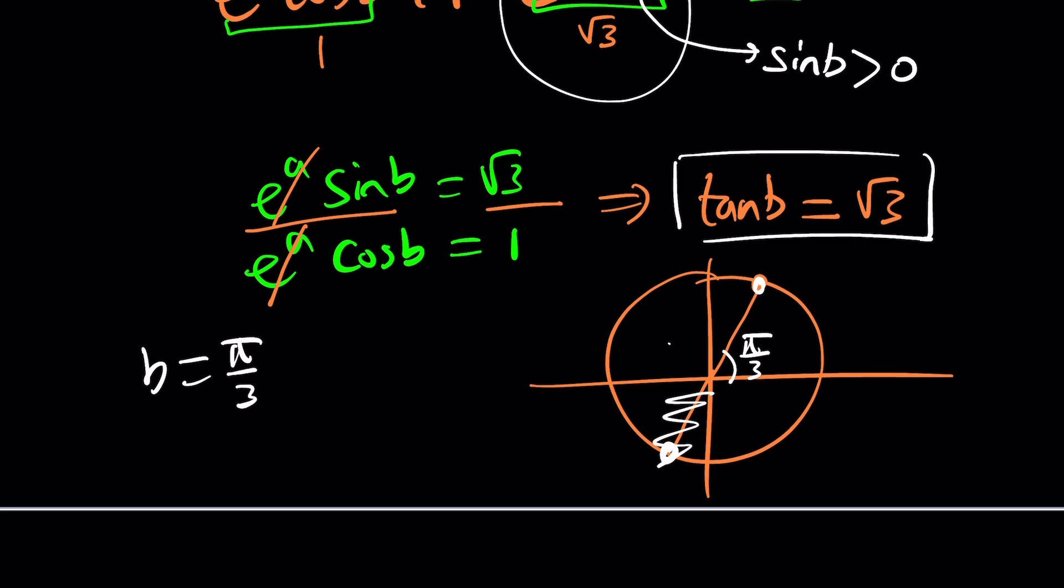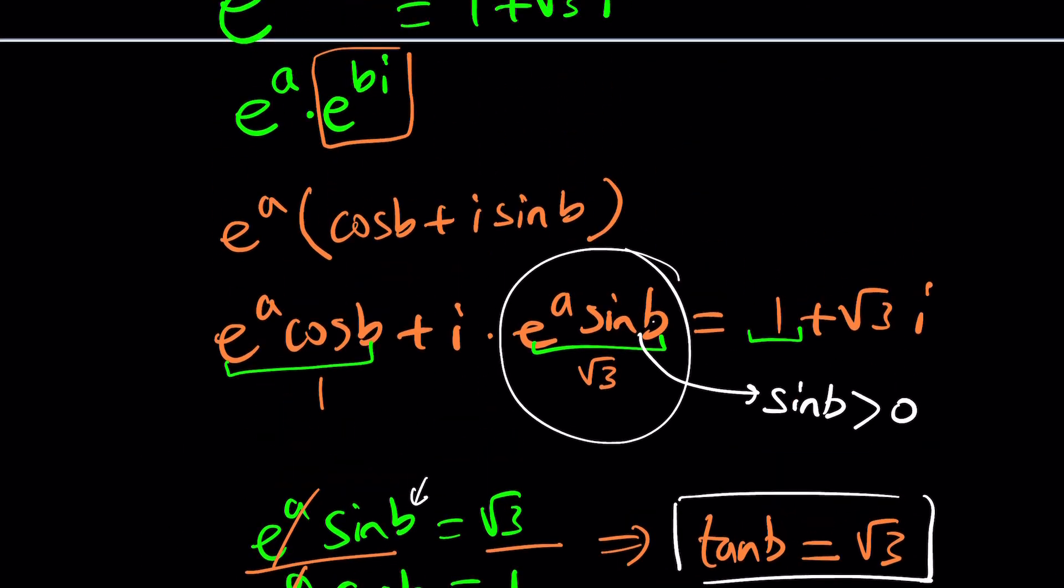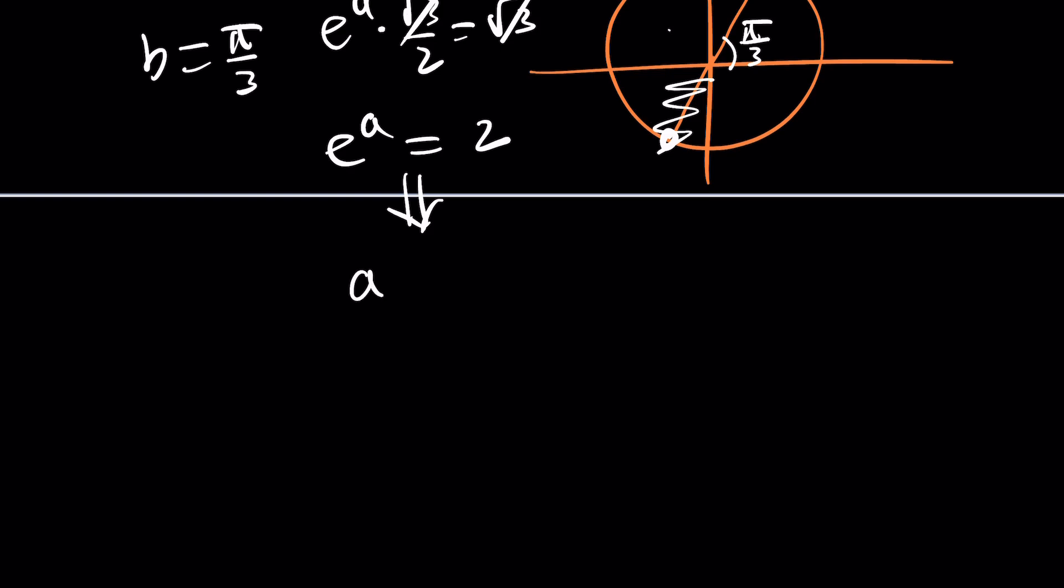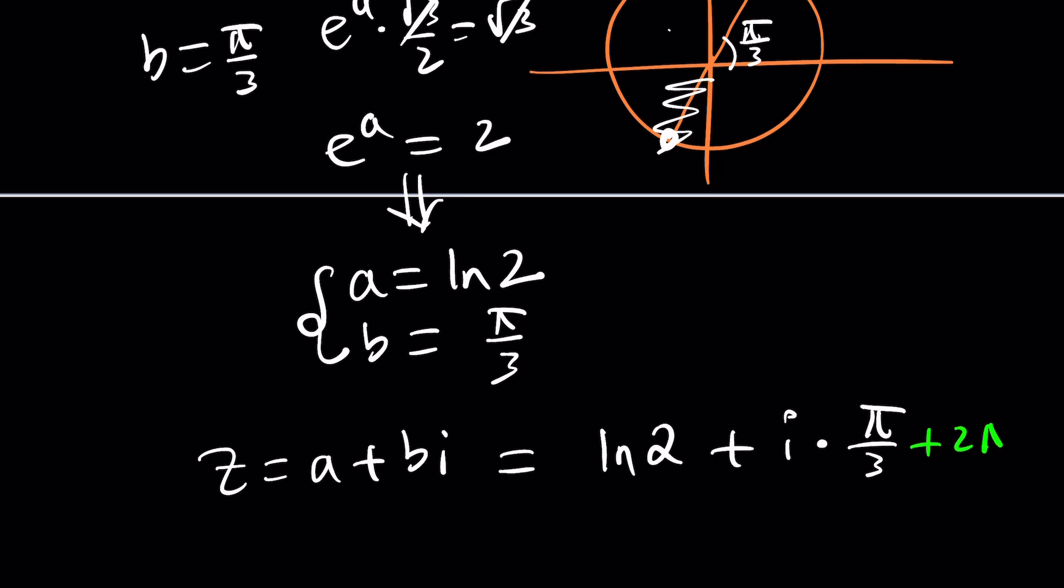That means sine b is root 3, which means e to the a is equal to 1, which means a is equal to 0. Really? Is that the case? No, wait a minute. Sorry, I messed up. If b is equal to pi over 3, then sine of pi over 3 is root 3 over 2. How did I miss that? So from here, e to the a becomes 2. How is that important? Well, just plug it in, and you're going to get the answer. But wait a minute. We got e to the a. We didn't get a. Well, ln both sides. You're going to get a equals ln 2, and b is equal to pi over 3. And what did we say about z? We said z is equal to a plus bi. Of course, you can add multiples of 2 pi to it to make the solution complete.